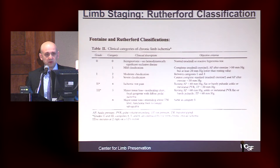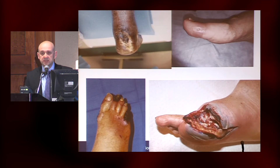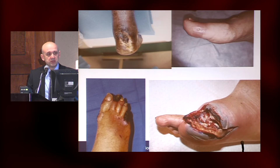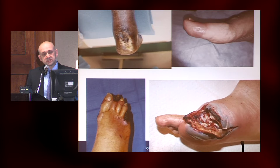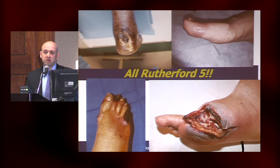When we talk about vascular surgery classification, we all know the Rutherford classification system, where categories four through six discuss critical limb ischemia. Importantly, this system is mostly used for research purposes and diabetics were meant to be excluded. If you look at four different presentations — a posterior heel ulcer with an eschar, gangrene localized to the digits, a very superficial ulcer, and a post-surgical wound — what's common is that they would all be classified as Rutherford V, yet we know they're all quite different.